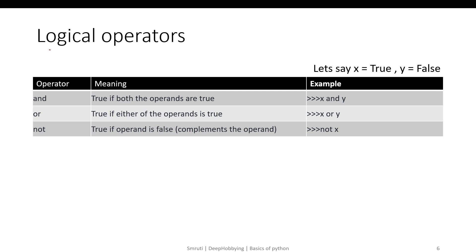The next set of operators is called logical operators, and they are used for conditional statements. We'll discuss how to use them for conditional looping when we reach that topic. For now, let's say we have two variables X and Y that take only Boolean input — True or False. There are three types of logical operators in Python: and, or, and not.